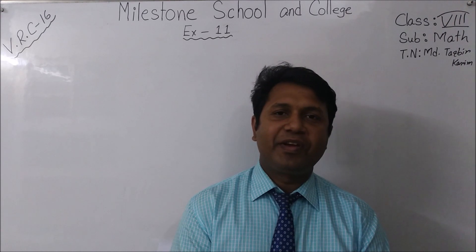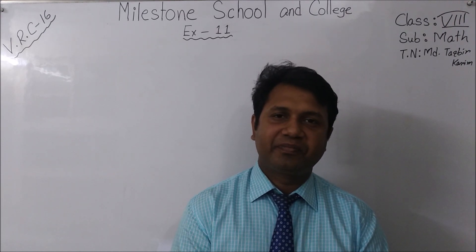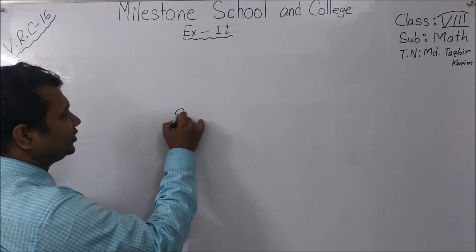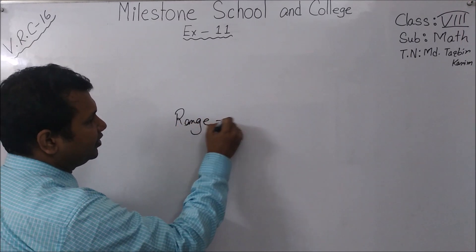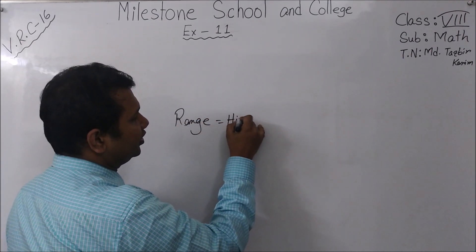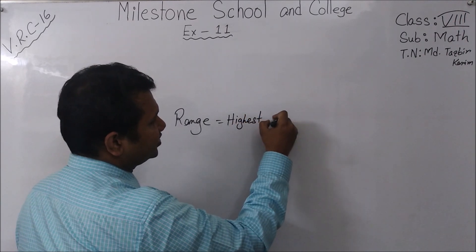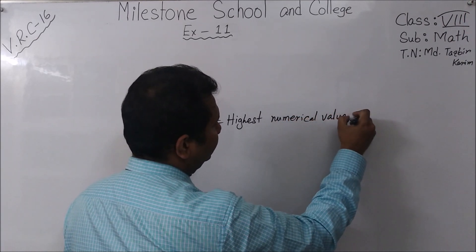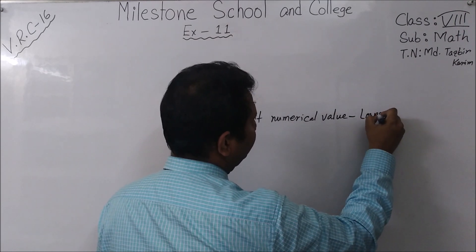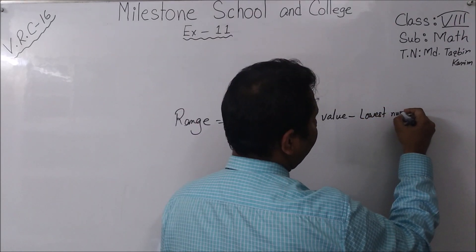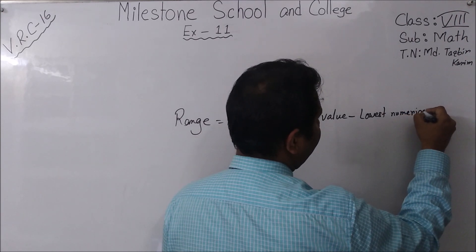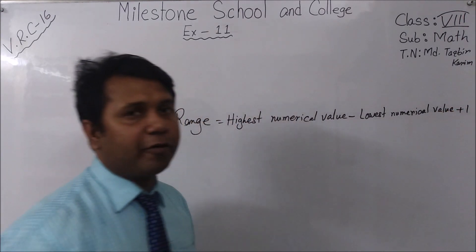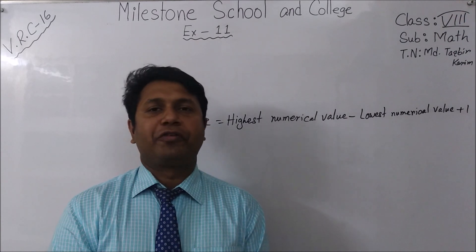Can you tell me what is the formula of range? Yes, I think you are right. The formula of range is: range equals highest numerical value minus lowest numerical value, plus one. So this is the formula of range.